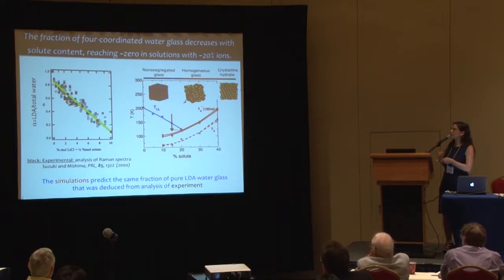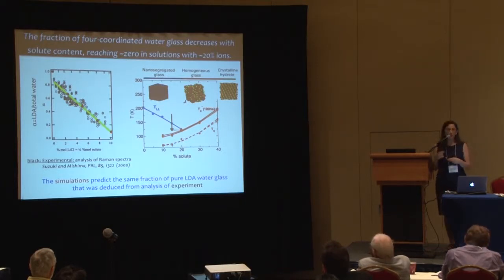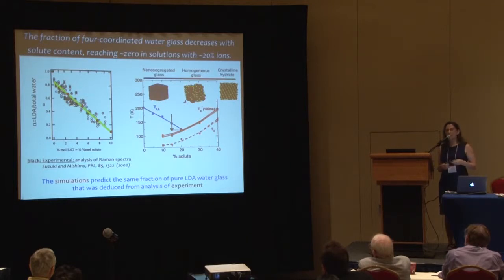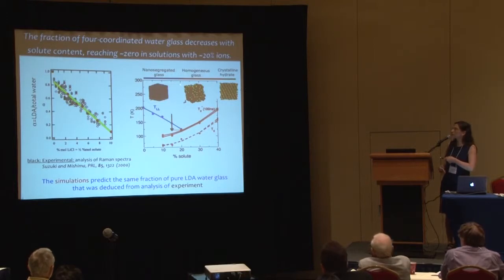In all regions where LDA can form, nanosegregated glasses form. Around 20% solutes, you cross the glass transition line; on the other side forms a homogeneous glass. At 50% water and 50% ions, you get a hydrate. The same sequence is observed in experiments: two glass transitions, one glass transition, and crystallization. So why do we end up with a nanosegregated glass rather than the lower free energy state of two large separated domains? Because the time it would take to coarsen into that structure would allow crystallization to set in.